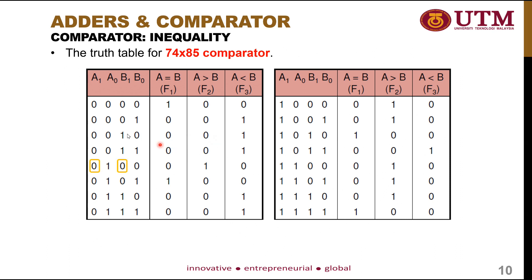For the next example, we compare the MSB first: A1 equals 0 and B1 equals 0, so equality occurs. We then compare the lower bits: A0 equals 1 and B0 equals 0. A0 is greater than B0, so the output A greater than B becomes 1 and the other outputs become 0.